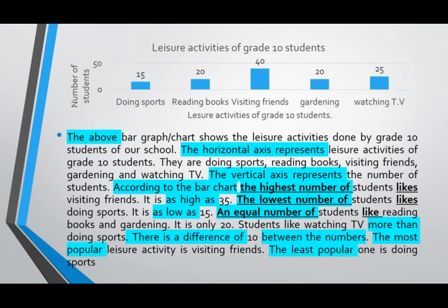The above bar graph shows the leisure activities done by grade 10 students of our school. The horizontal axis represents leisure activities of grade 10 students. They are doing sports, reading books, visiting friends, gardening and watching TV. The vertical axis represents the number of students.